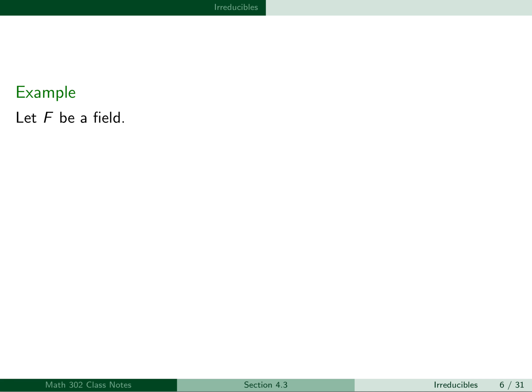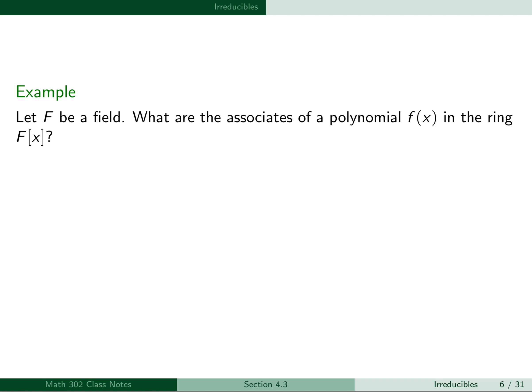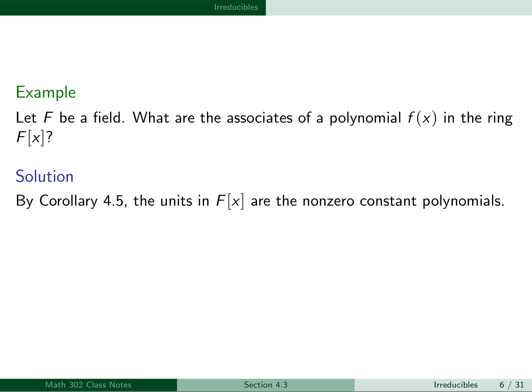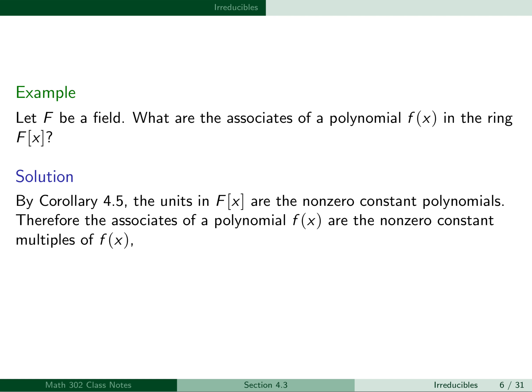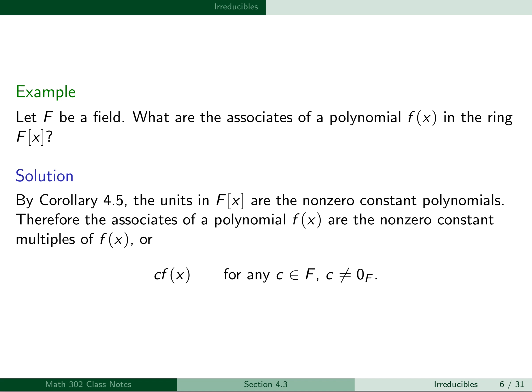For another example, let F be a field. What are the associates of a polynomial f(x) in the ring F[x]? By Corollary 4.5, the units in F[x] are the non-zero constant polynomials. Therefore, the associates of a polynomial f(x) are the non-zero constant multiples of f(x), or c·f(x) for any c in F with c not equal to 0. So a polynomial will have infinitely many associates, depending upon whether the field itself is infinite or not.